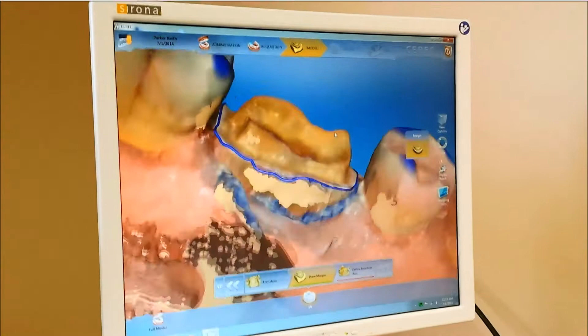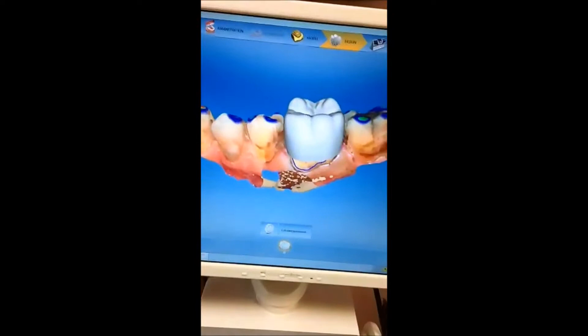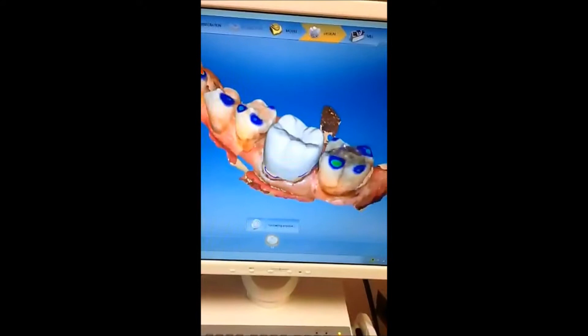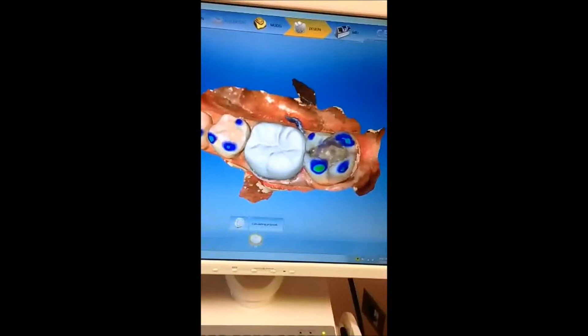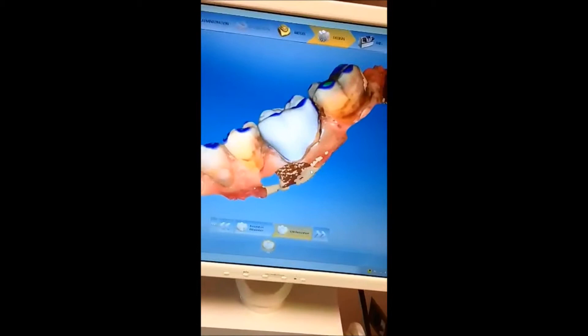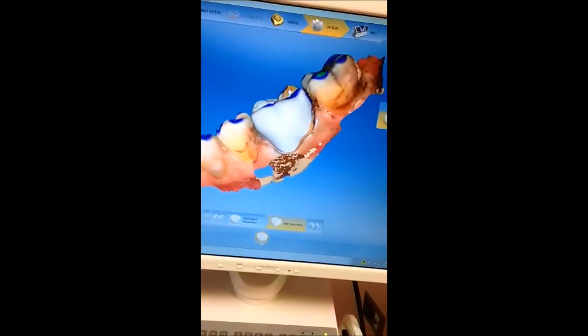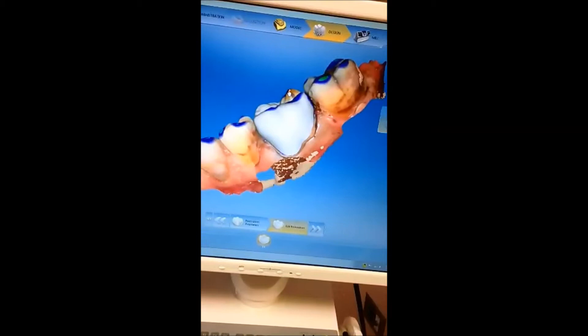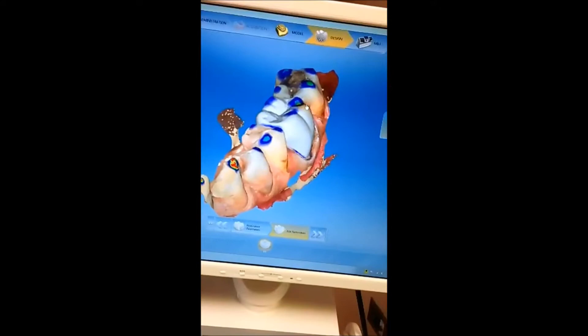So this is where the software uses the size and shape of your teeth to calculate the new crown restoration and designs your final restoration. And then what we can do is change the shape by adding little nuances and making sure that we like all of the fit.